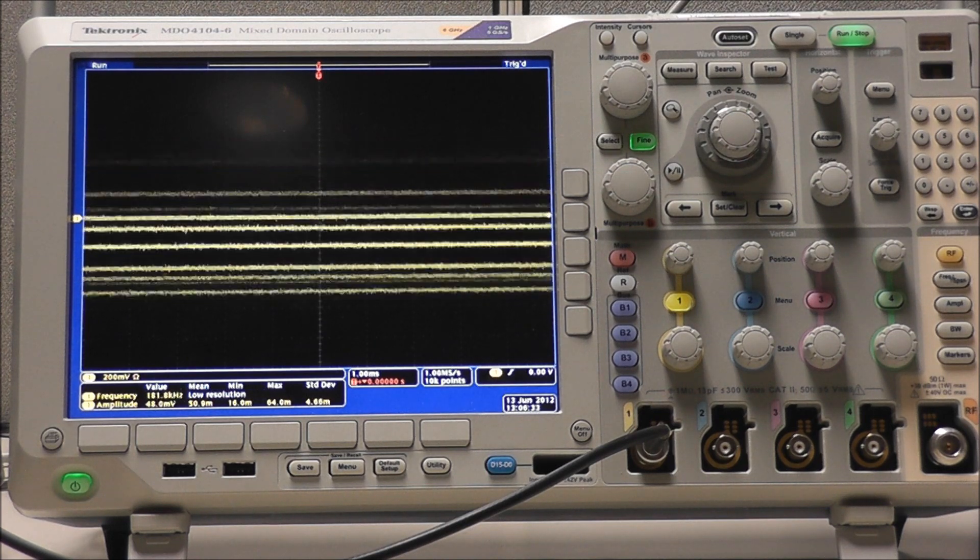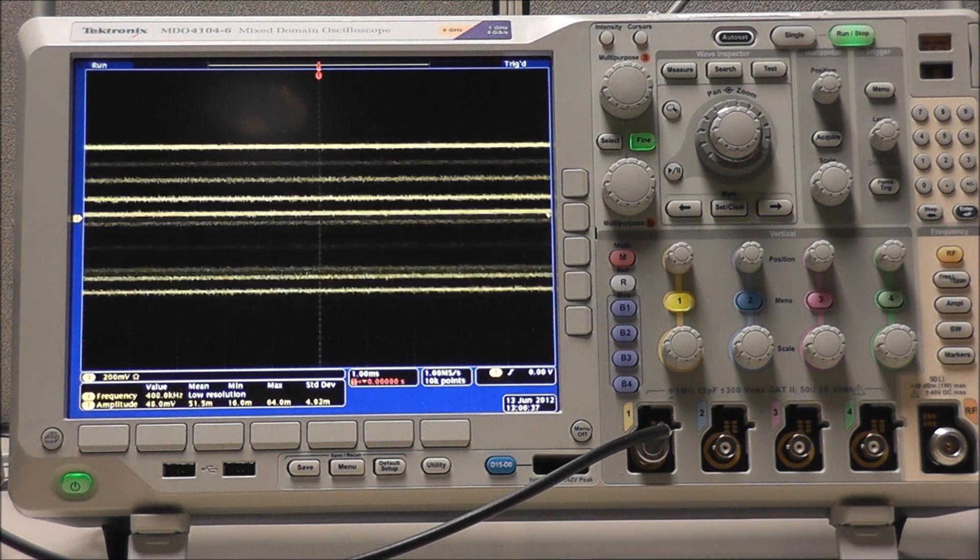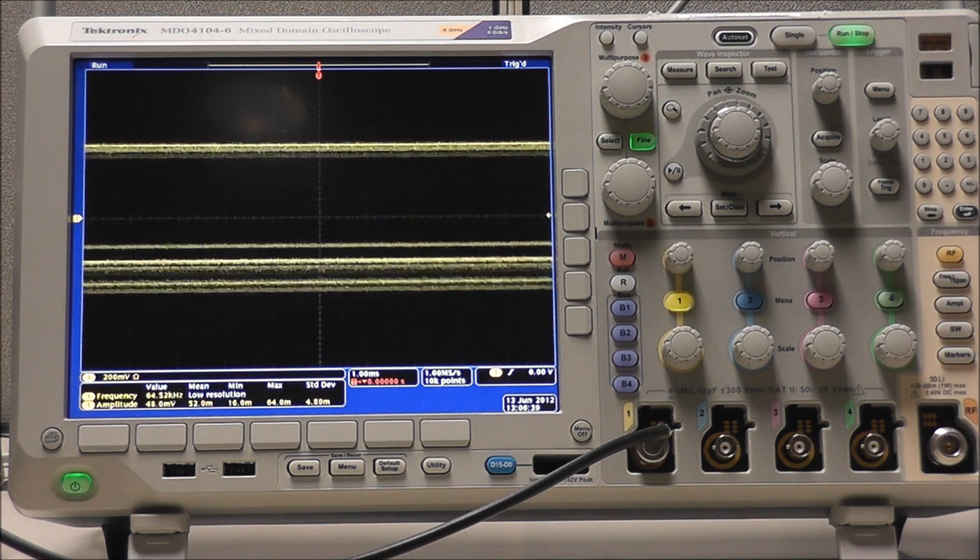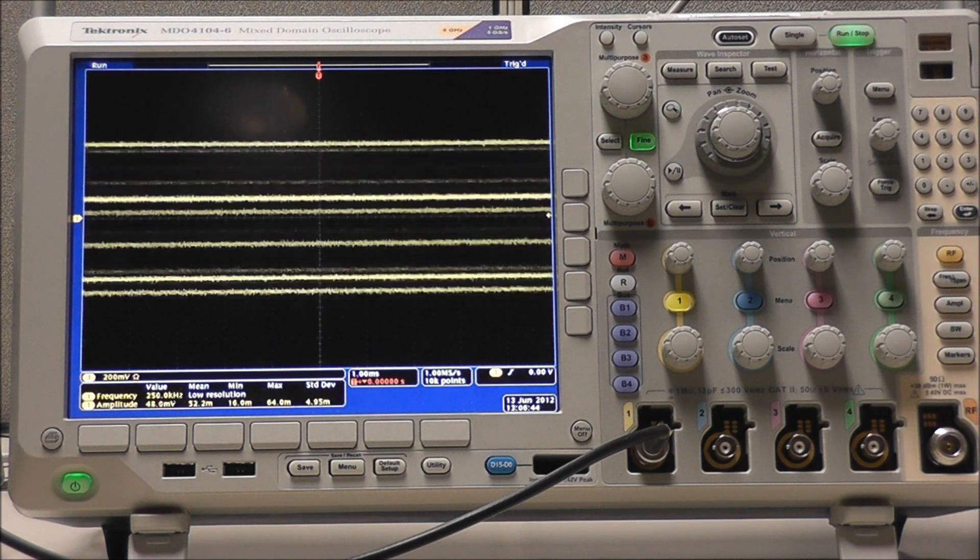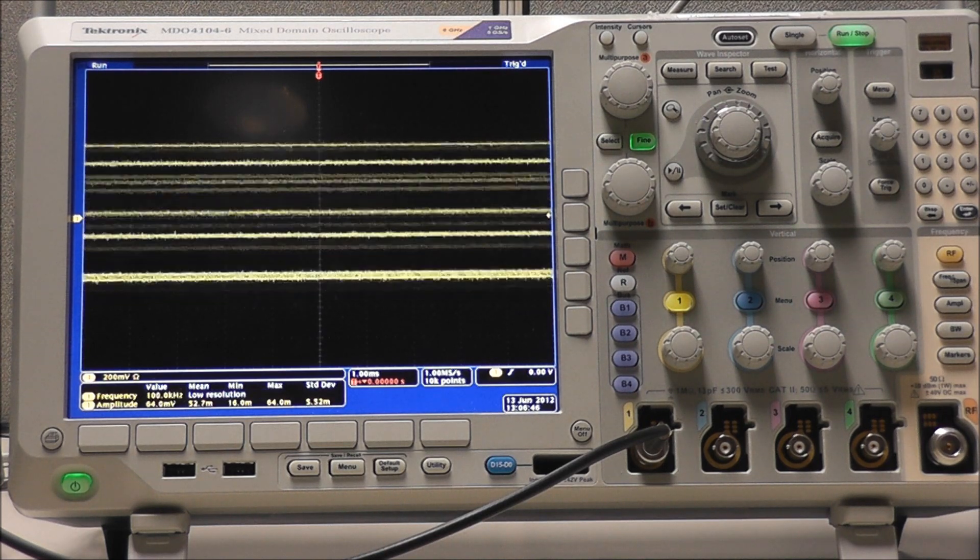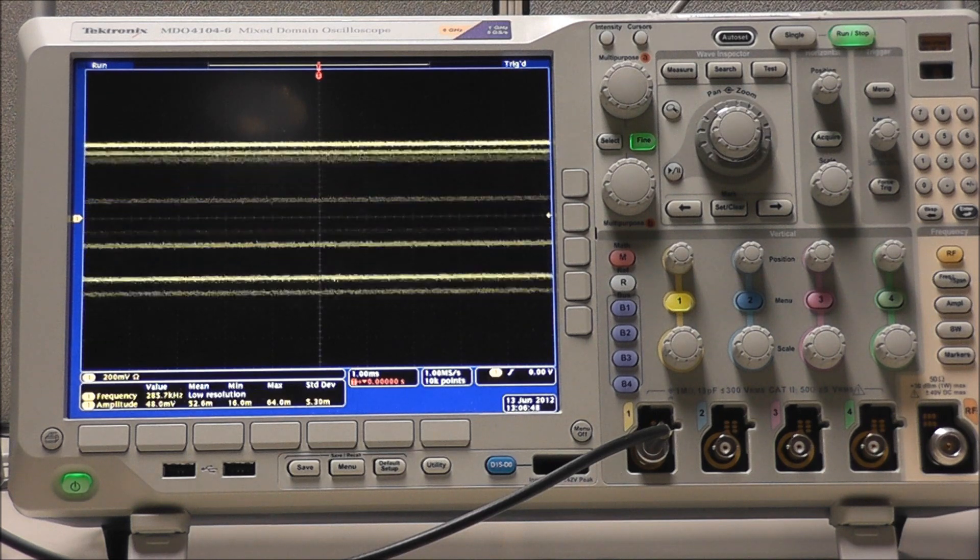Aliasing occurs when the oscilloscope does not sample the signal fast enough to construct an accurate waveform record. This is because the scope interpolates data in between each sampling point. The fewer the sampling points, the greater the error due to interpolation.